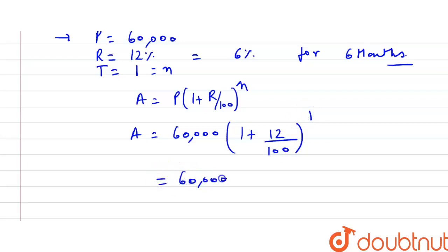That is 60,000 multiplied - not 12%, but 6% for half-yearly - so it becomes 106 divided by 100. Two zeros cancel each other, and we're left with rupees 63,600. So after